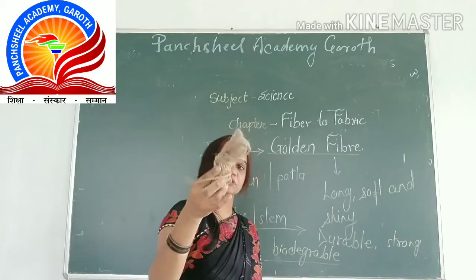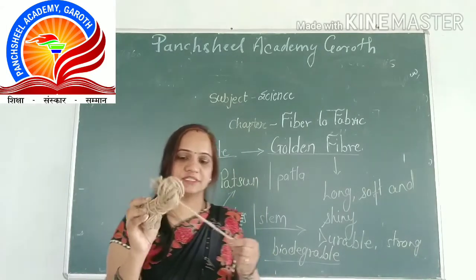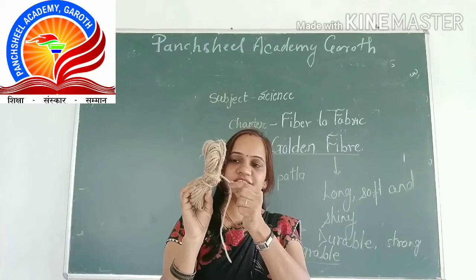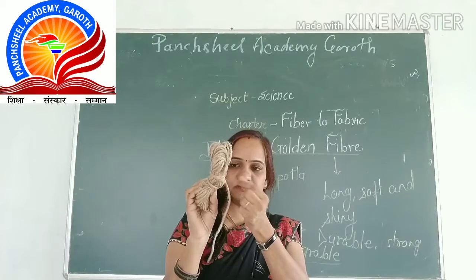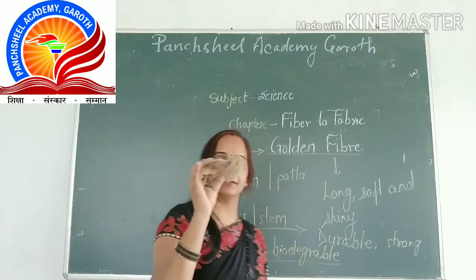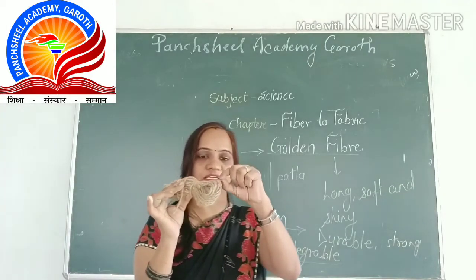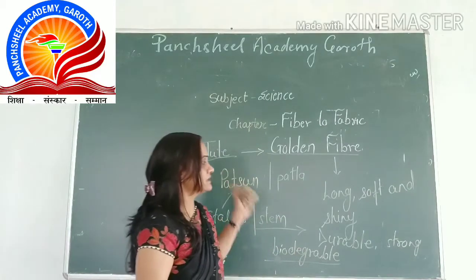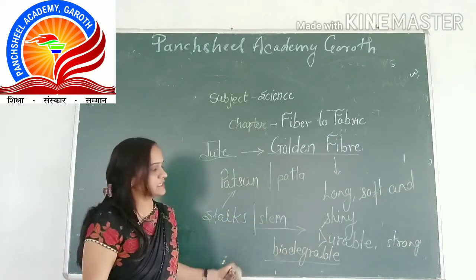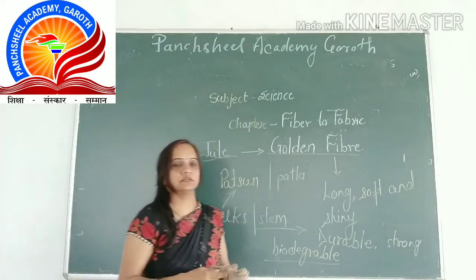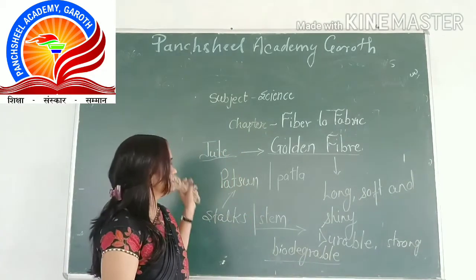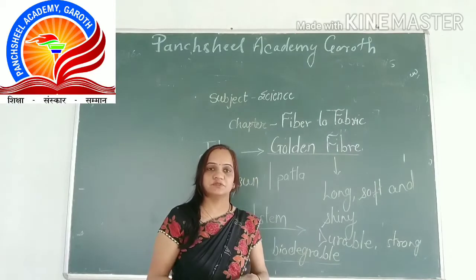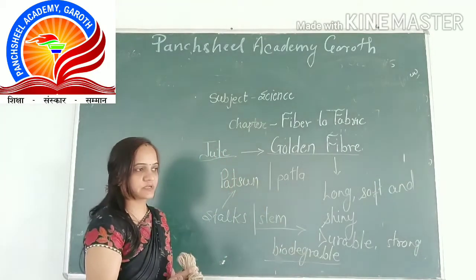If you look at jute fiber closely, you will see that the color of each fiber is golden and it is shiny in appearance. The fiber is golden in color, long, soft, and shiny. Jute fibers are very strong and biodegradable. The most producing state of India for jute is West Bengal. Jute has many uses.